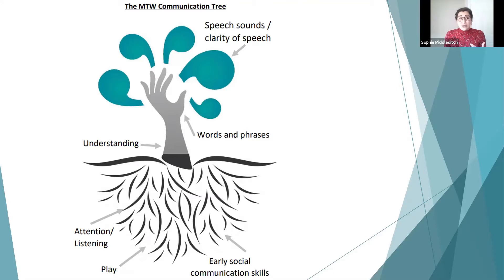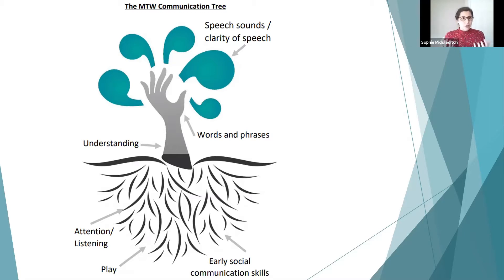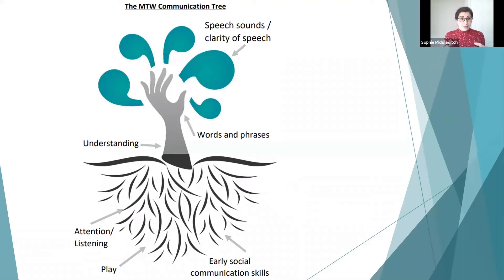Total communication means using lots of different methods together. Finally, we have speech clarity, which develops last. We need to focus on speech sounds only once a child has good understanding and good use of language. If they have a really limited range of words, we don't need to worry about the accuracy of what they're saying — it would be more functional for them to have 30 words than to work on speech sounds at that stage.